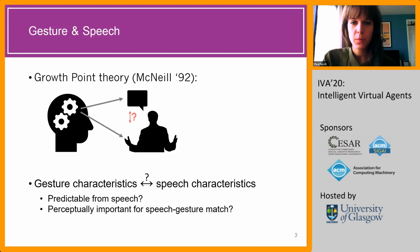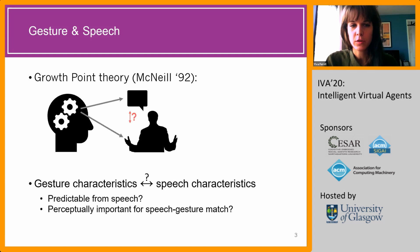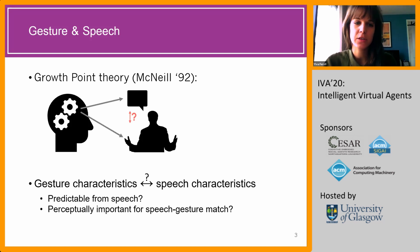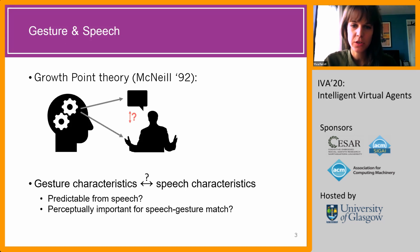For this, we look back to the theory of gesture. McNeil says with his growth point theory that speech and gesture have the same origin. So speech may give us an indication of the underlying intention that inspired a gesture, but it may never fully predict the gesture expression. So there's a kind of implicit, indeterministic relationship between the speech output and the gesture output.